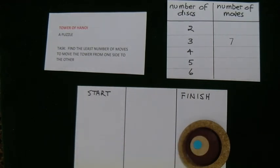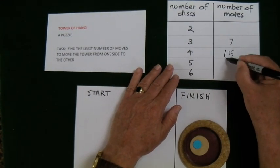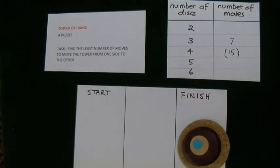I think that might be the smallest. I'm not sure. I'd need to try it out more times. But I'm going to write fifteen there in brackets. So what about five? What about six? Can you spot a pattern? Can you predict what five and six might be?